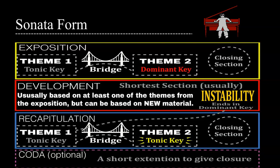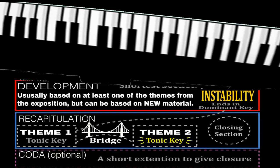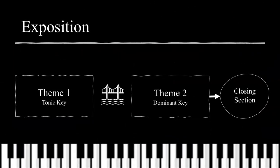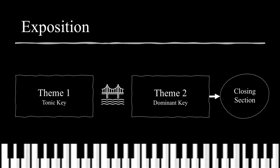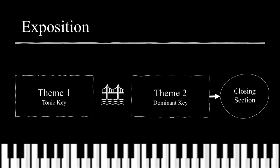Let's look at Section A, the exposition. The exposition has three primary purposes: to establish home key tonality, to move to a secondary key area through a perfect authentic cadence (or PAC), and to lay out themes to be embellished upon for the rest of the piece.